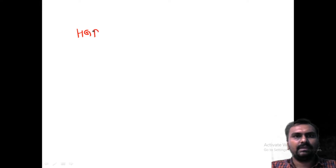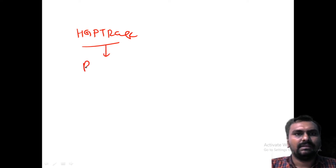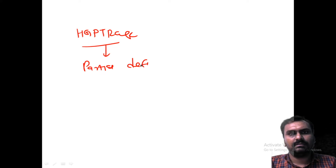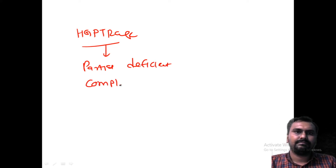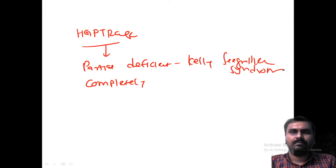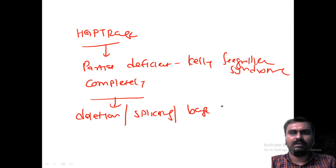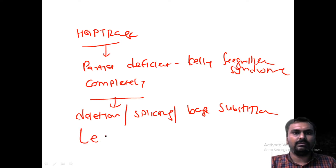If there is a deficiency of HGPRTase, there is both partial deficiency and complete deficiency. Partial deficiency leads to Kelley-Seegmiller syndrome. Complete HGPRTase deficiency — which may be due to deletion, abnormal splicing, or nitrogen-base substitution — leads to the very important disease called Lesch-Nyhan syndrome.